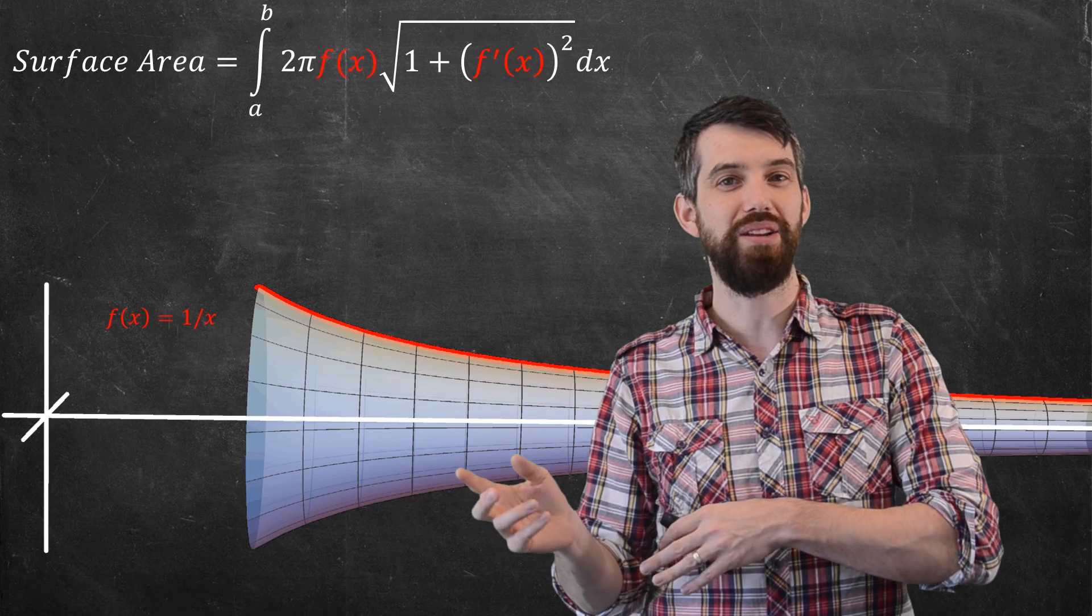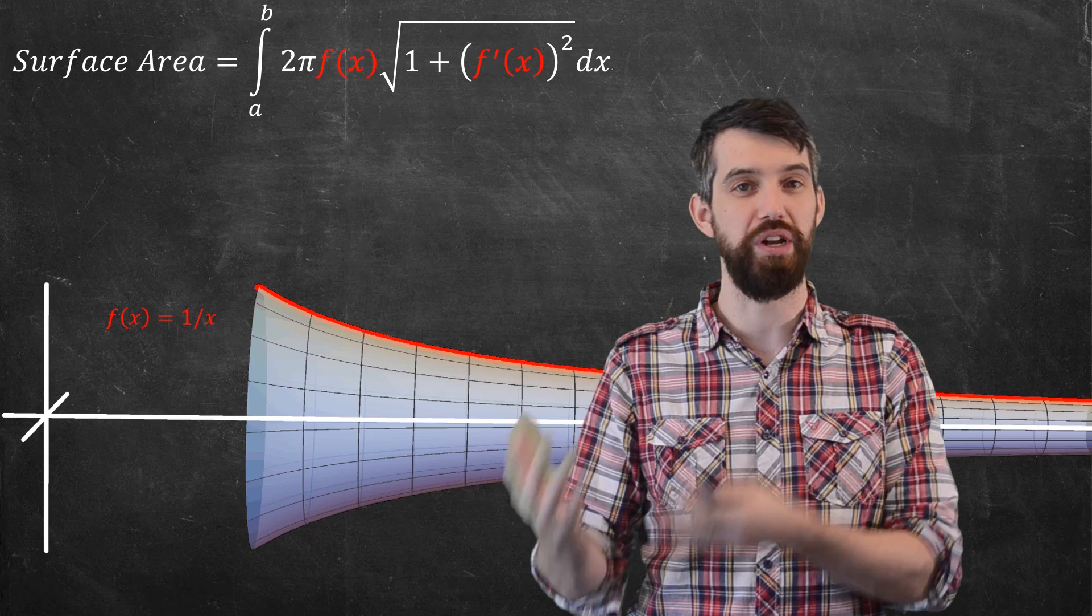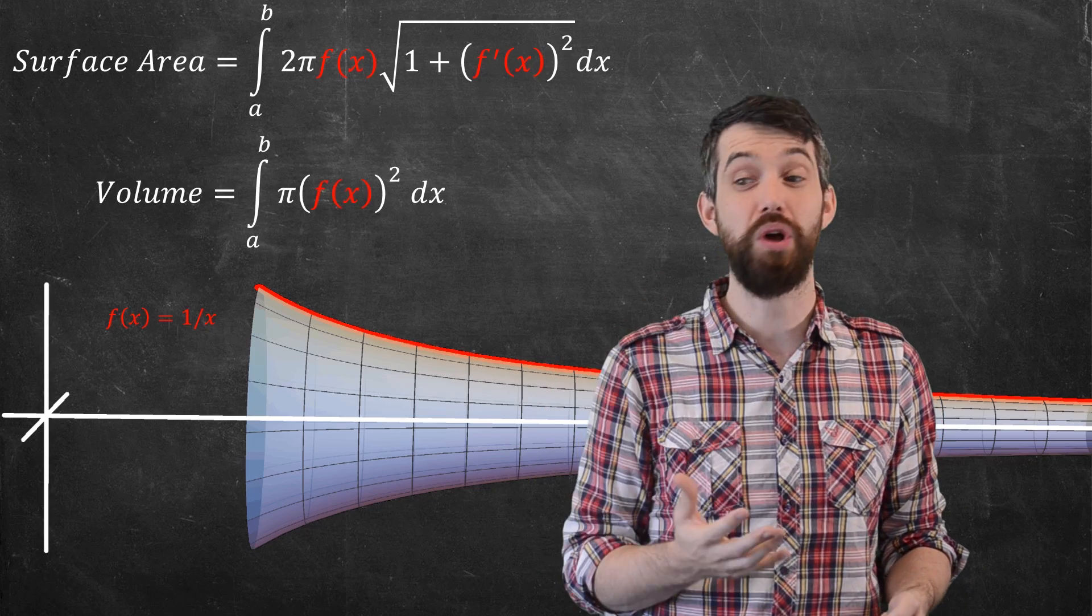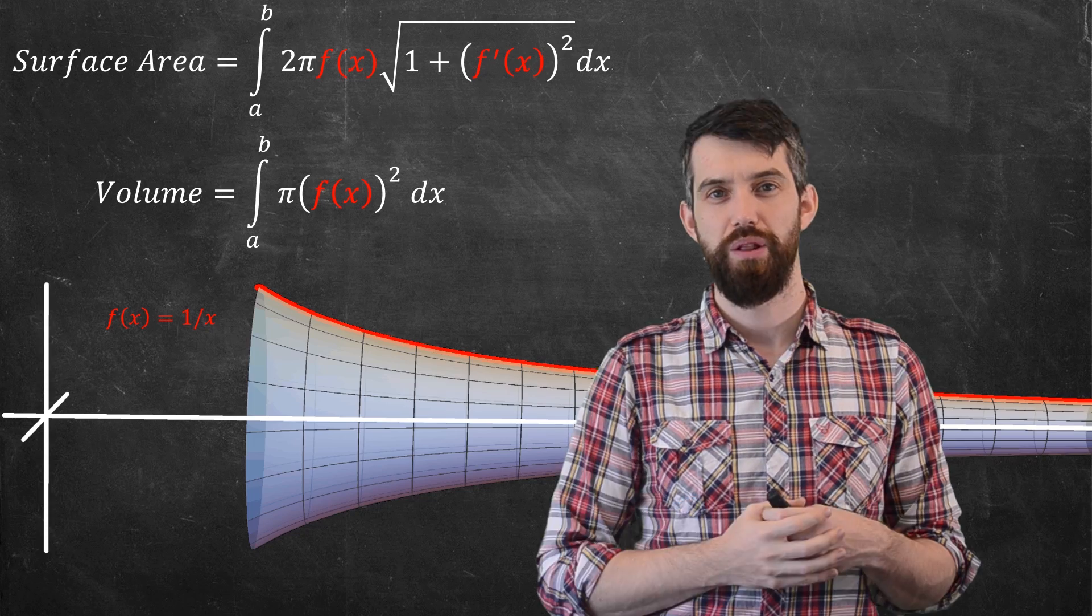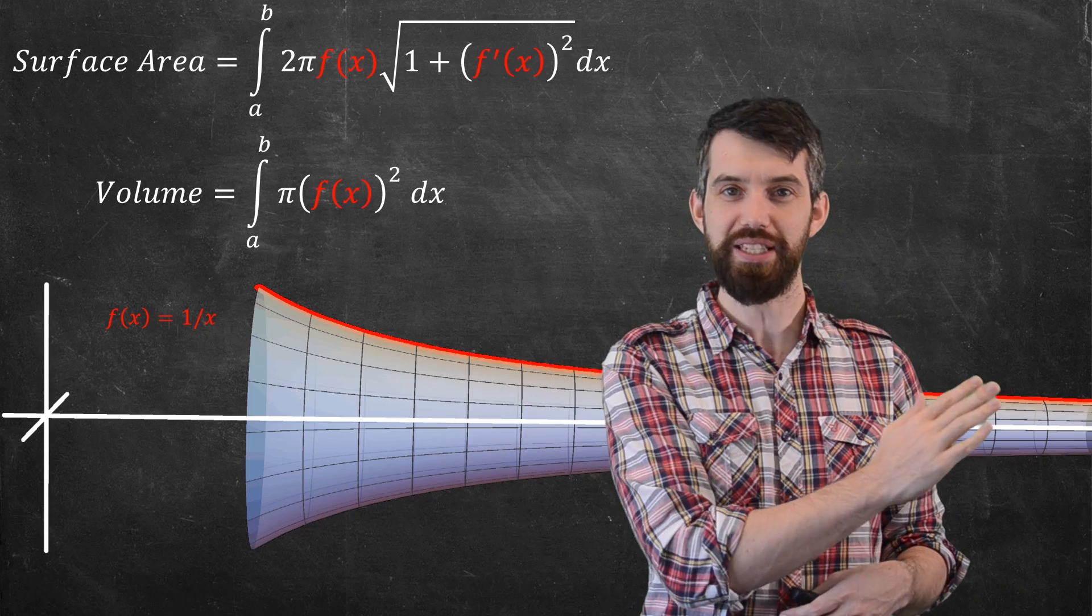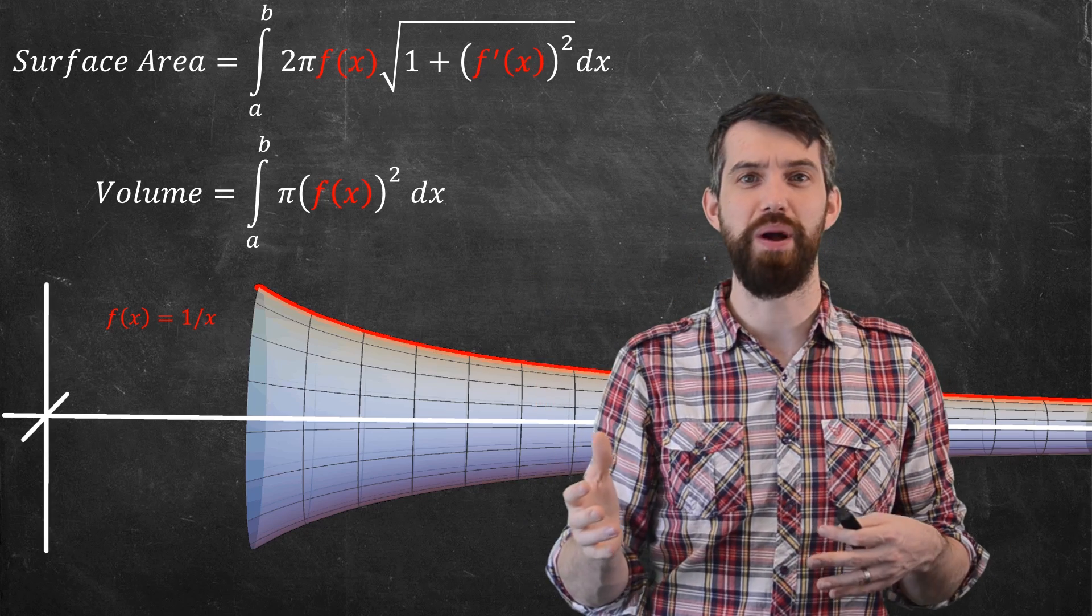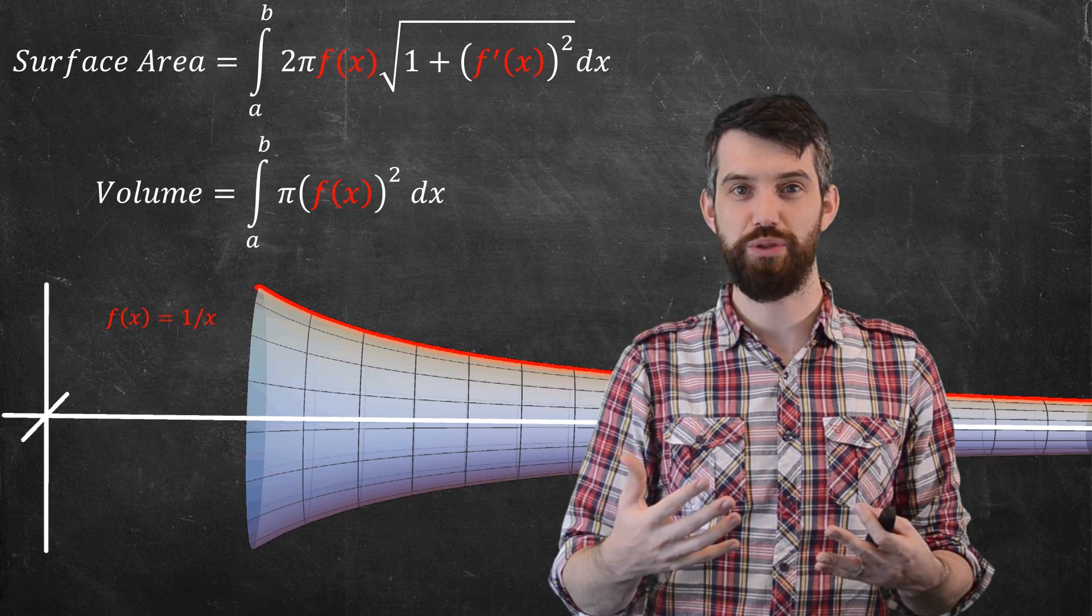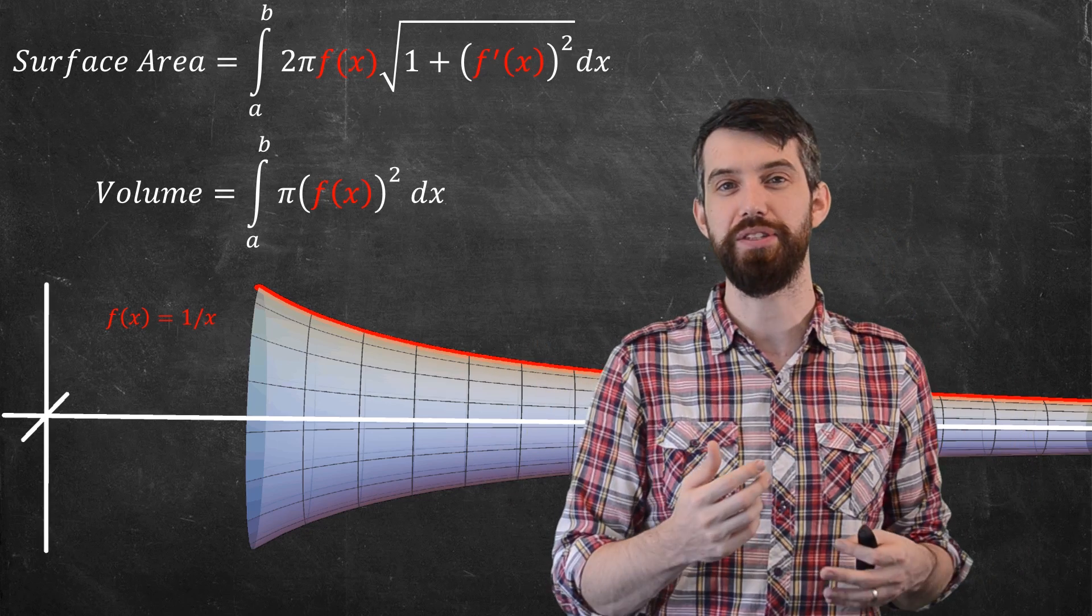But back in calculus 1, we had seen a formula for the volume of a region of revolution. And the formula we saw in calculus 1 is it's the integral of pi f(x) squared. The way we derived that formula is we thought of adding up a whole bunch of little disks. The width of all the little disks was dx, but the area of the disk was going to be pi the radius squared. So pi f(x) squared in this case.